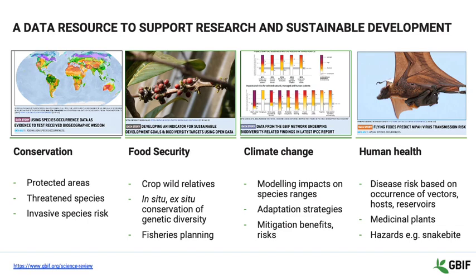Data shared through GBIF supports conservation, by helping to identify the most important sites for protected areas, by underpinning assessment of species extinction risk through the red-listing process, and by tracking the actual and predicted spread of invasive alien species. Data shared through GBIF supports food security, by mapping the distribution of the wild relatives of the most important food crops, and therefore the location of the genetic resources that need to be conserved for future plant breeding, and by providing information on both marine and freshwater fish species, along with other wild species important for nutrition. Data shared through GBIF supports action on climate change, through helping to model how species ranges will change under different climate scenarios, informing strategies to adapt to climate change, and assessing the impacts of measures to mitigate climate change — for example, increased production of biofuels and hydropower.